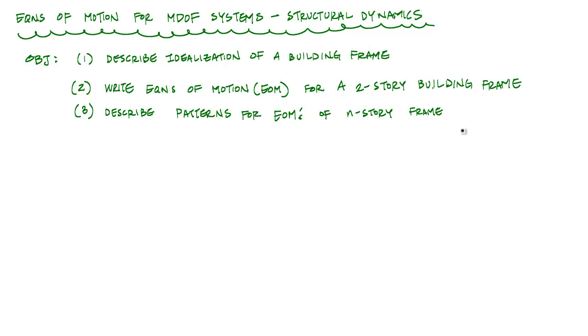And how we simplify it so that we can make our analysis process a little bit easier. Go through a quick example on how to write the equations of motion for a two-story building frame, and then at the end of it, I'll just talk about a general approach for coming up with equations of motion for any size or an n-story frame.